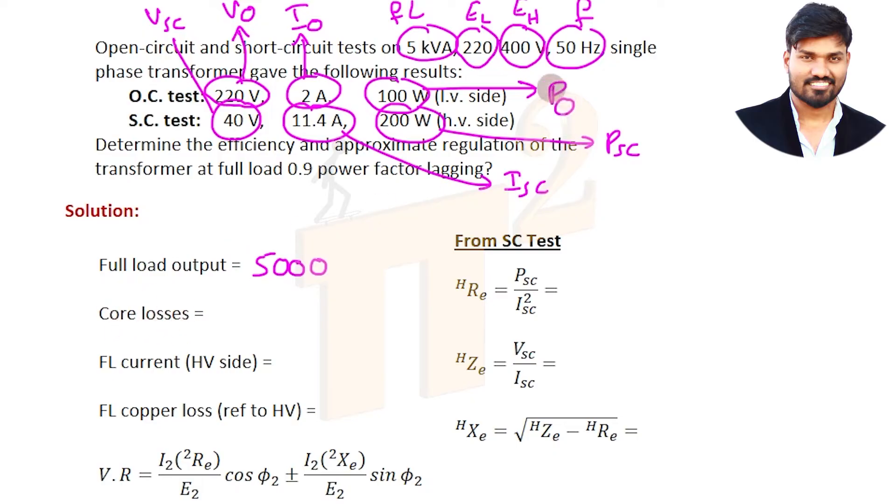Core losses equal P_0, which is the core loss. P_0 is 100 because you are applying 220 volts which is the rated voltage on the low voltage side.